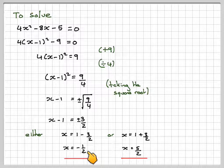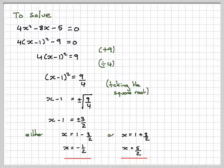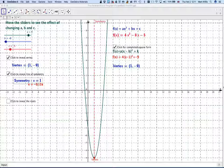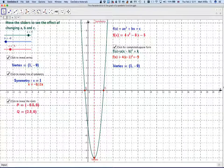So we've got two solutions, x equals minus 1 half and x equals 5 over 2. So if we go to our GeoGebra applet and click here, we can see the roots.